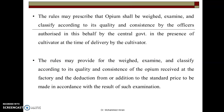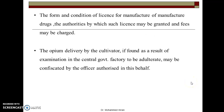The rules may prescribe that opium shall be weighed, examined, and classified according to its quality and consistency by authorized officers. This means in the presence of the cultivator and government officer, full testing will happen — the weight will be determined, it will be categorized accordingly, and payment will be given on that basis. The form and conditions of licenses for manufacture of drugs, and the authorities by which such licenses may be granted and fees charged, will also be decided by the Central Government. If the opium delivered by the cultivator is found to be adulterated upon examination, it may be confiscated by the authorized officer, and the price will be reduced and punishment may also be given.